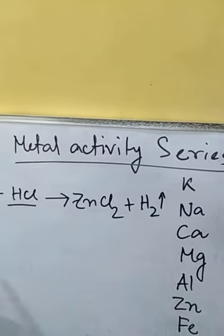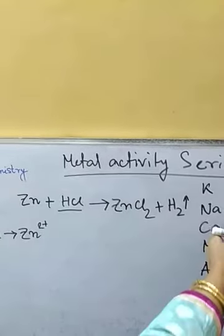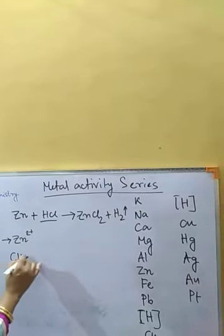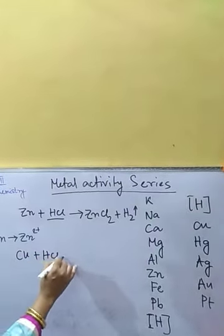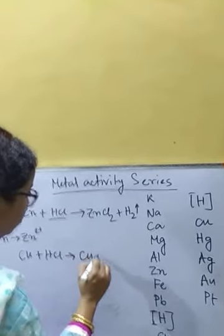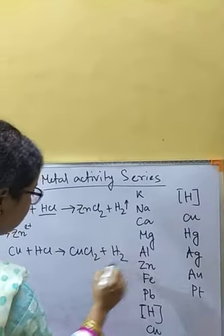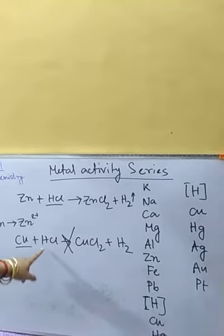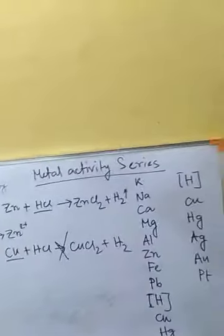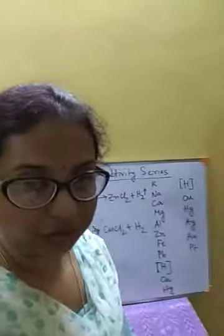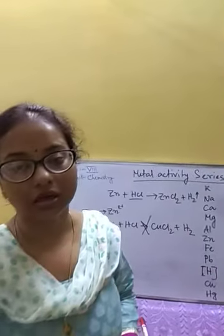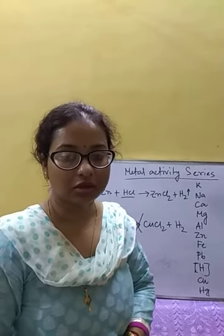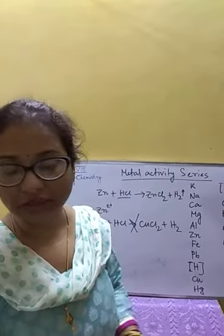But if instead of zinc we take copper, then since copper is less reactive than hydrogen, the reaction Cu + HCl → CuCl₂ + H₂ is not possible. This reaction cannot happen because copper is less reactive than hydrogen. So this is the importance of the metal activity series. Today we stop here; next class we will discuss more importance of the metal activity series. Keep studying, take care.